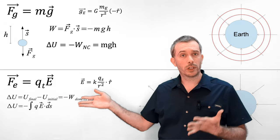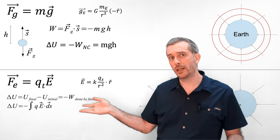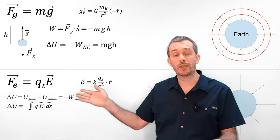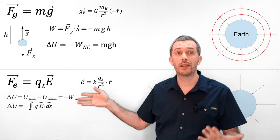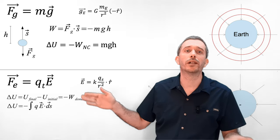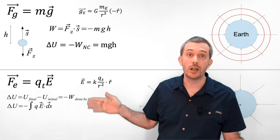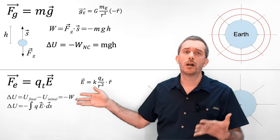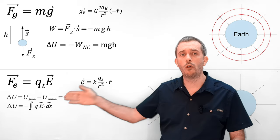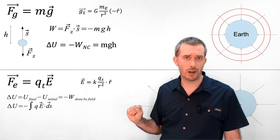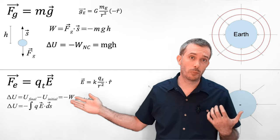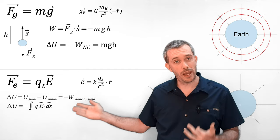The work done by the electric force is the charge that it moves times the electric field and then times the distance traveled. Or if the field is changing, integrating the charge q times E over the distance traveled. So we have our electric potential energy.